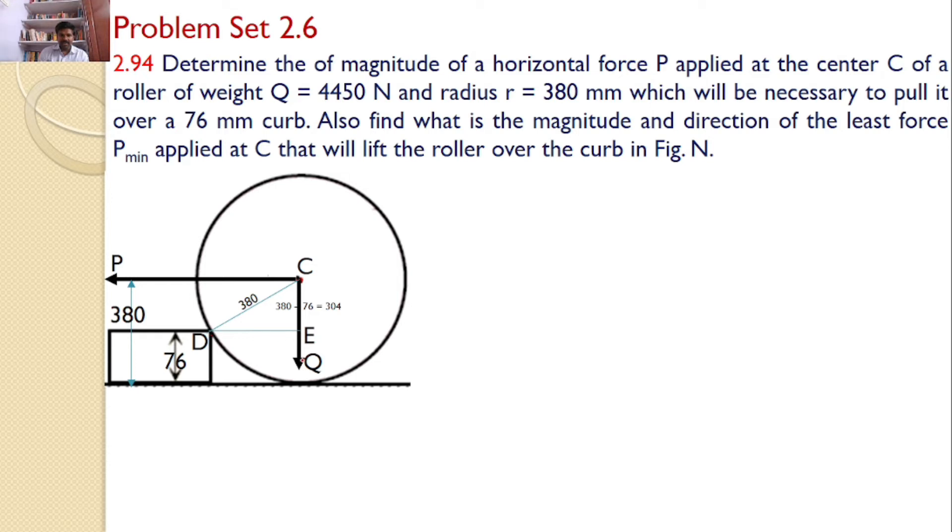DE is equal to the total distance 380 minus this 76, which gives 304 mm. Hence CE is equal to 304 mm. Now once I know the value of CE equals 304 mm, I can find the value of DE by using the Pythagorean rule, that is square root of 380 squared minus 304 squared, which gives the value of 228 mm. DE value is 228 mm.